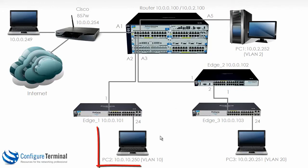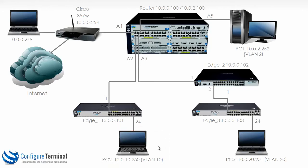Now let's put this PC, PC2, into VLAN 10. This gets a little bit more complicated. To do this we need to configure port 24 as an untagged port on Edge 1, so that port will only belong to VLAN 10.